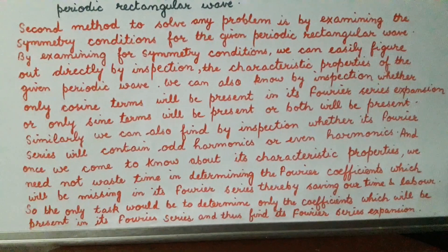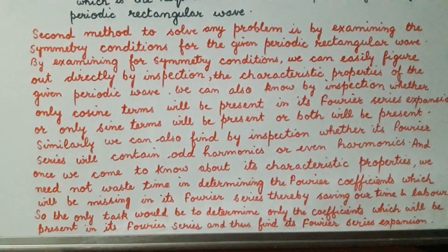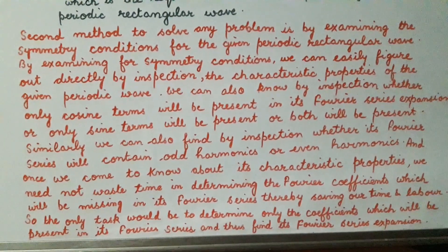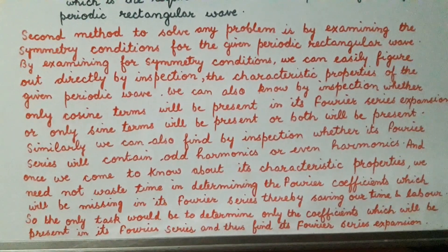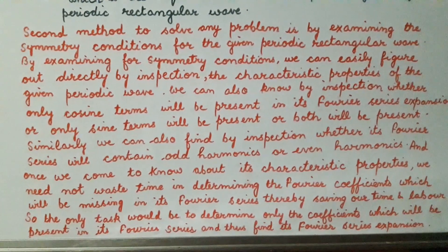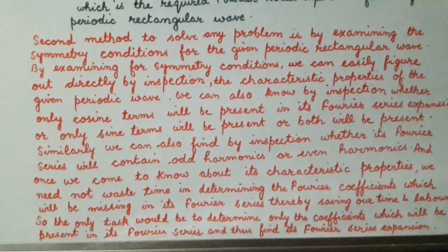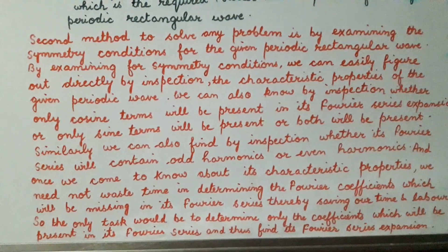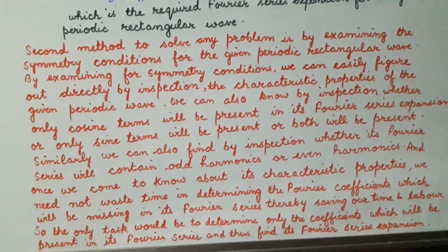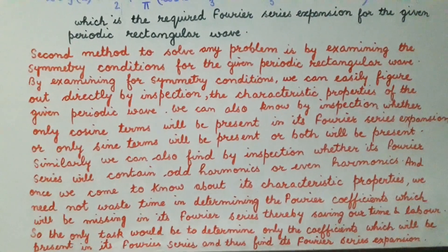The only task is to determine the values of those coefficients which are present in the Fourier series. In this way, we can find the Fourier series expansion for a given periodic wave easily by examining its symmetry conditions. Hope you understood both methods for finding the Fourier series expansion of any given periodic wave.